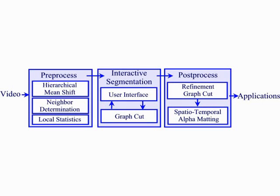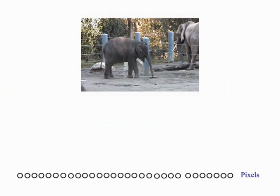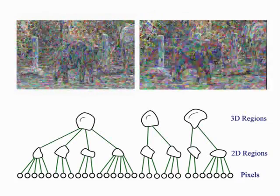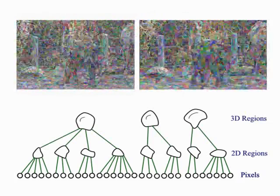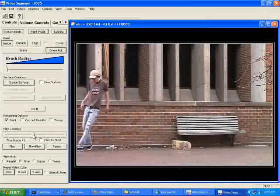Our system is composed of three main stages: pre-processing, interactive segmentation, and alpha matting. To efficiently extract the foreground objects, we pre-cluster the input video into a hierarchy of regions. We cluster pixels in each frame into small 2D regions using mean shift, then cluster the 2D regions across multiple frames to form 3D spatio-temporal regions.